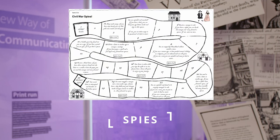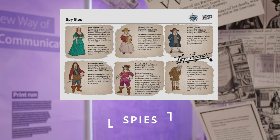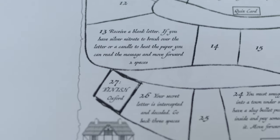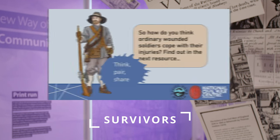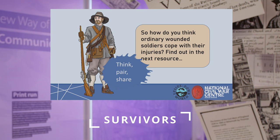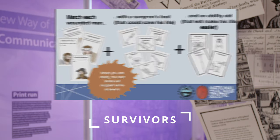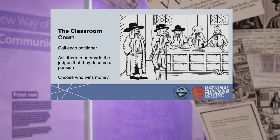Spies uncovers the hidden stories of secret agents. Children become part of a Royalist spy ring or they become Cromwell's spy catchers as they make secret plans, crack codes and learn more about the crucial role of women in the conflict. In Survivors, children learn more about the aftermath of the war. They find out about what happened to ordinary people who were wounded, widowed or orphaned. They role play real or invented characters and they take part in a county court deciding who most deserves help.